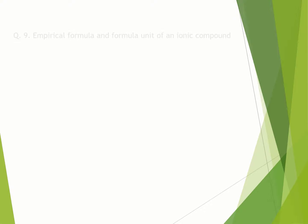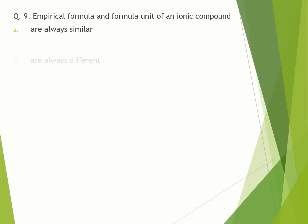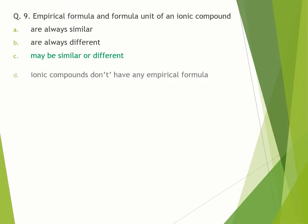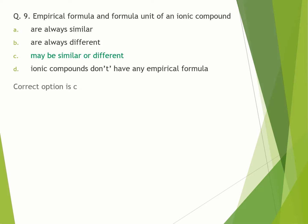Question number 9. Empirical formula and formula unit of an ionic compound: A. Are always similar. B. Are always different. C. May be similar or different. D. Ionic compounds don't have any empirical formula. Correct option is C.